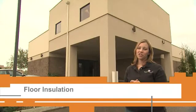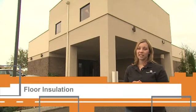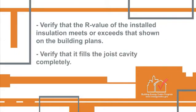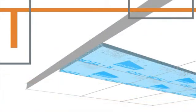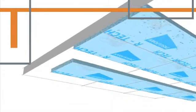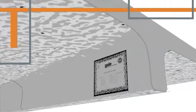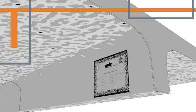There are two items to check when inspecting raised floor insulation. First, verify that the R-value of the installed insulation meets or exceeds that shown on the building plans. And second, verify that it fills the joist cavity completely. If rigid board insulation is installed, verify that the R-value printed on the insulation matches what's called for on the plans. For sprayed-on insulation, check the installation certificate to verify the installed R-value meets or exceeds what's called for on the plans.